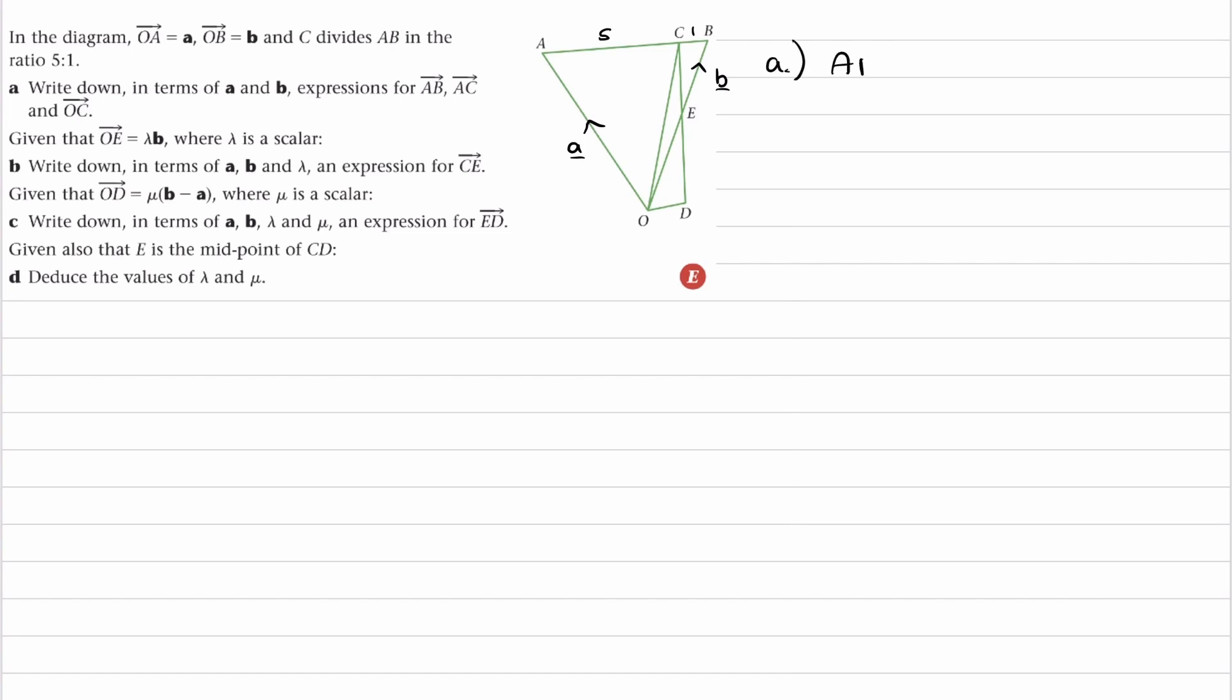So let's start with AB. This one's straightforward. We just go from A to O and then O to B, and that would be minus a plus b.